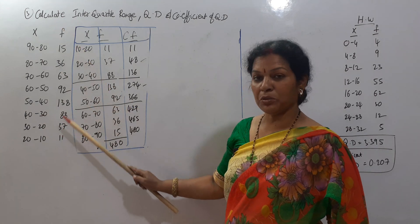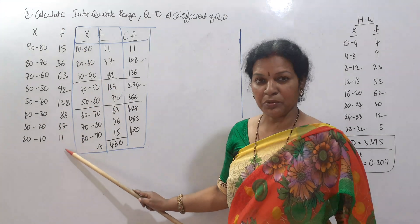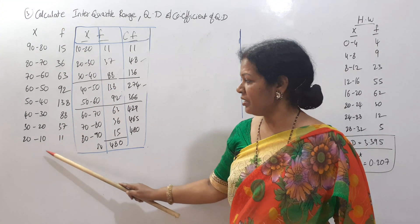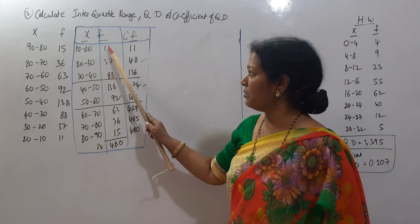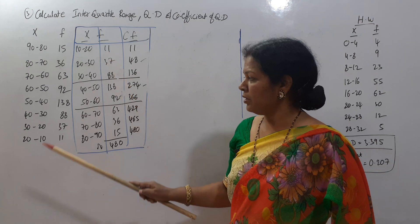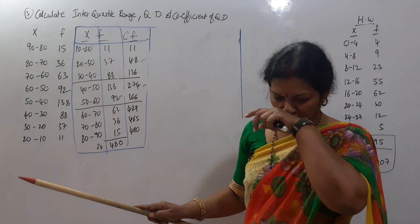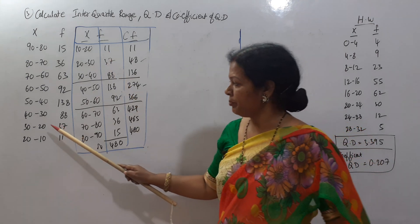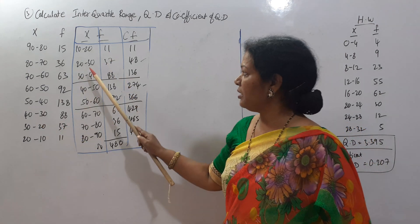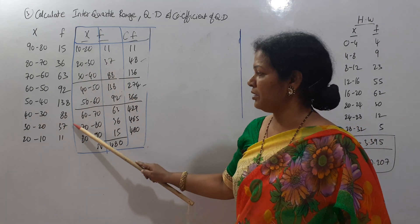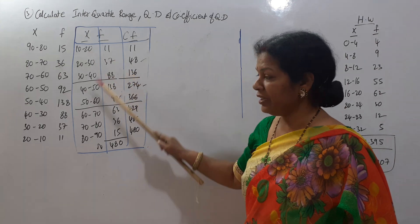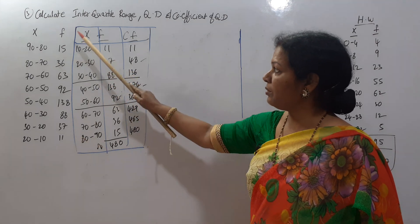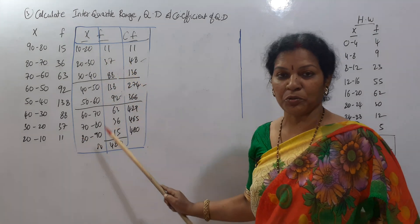Now we will arrange the frequency of the data in ascending order. So we have 10 to 20 with frequency 11, and 20 to 30 with frequency 37.